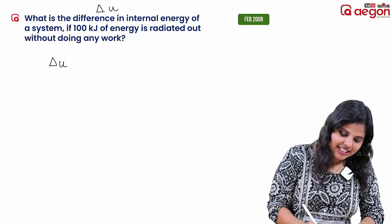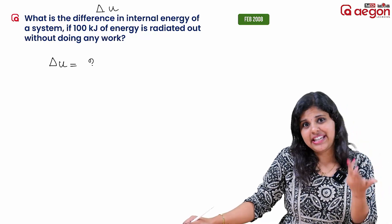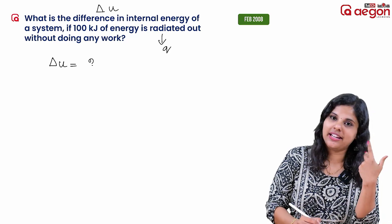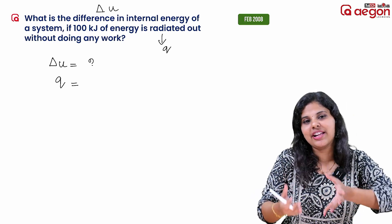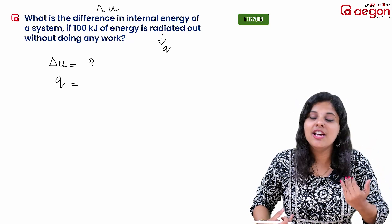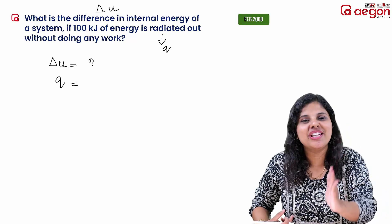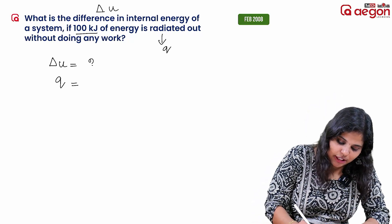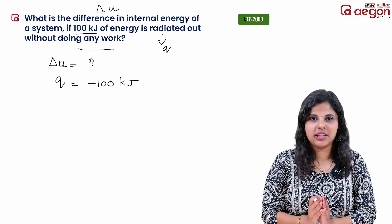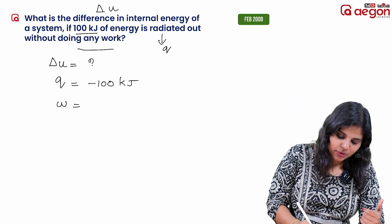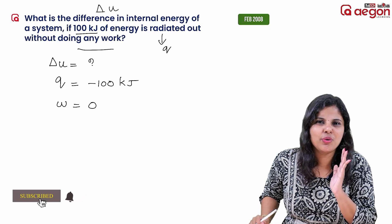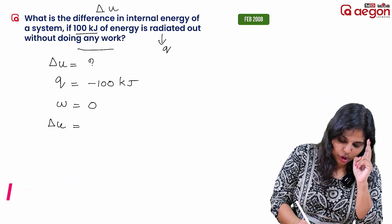So, delta U. Q — the energy is radiated, and energy represents Q. When energy is absorbed, Q is positive; when energy is emitted, Q is negative. Here, 100 kJ is radiated out, so we call it minus 100 kJ. Without doing any work means W is 0. You can connect here: delta U = Q + W.